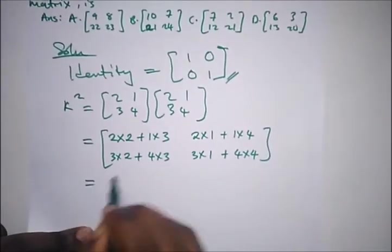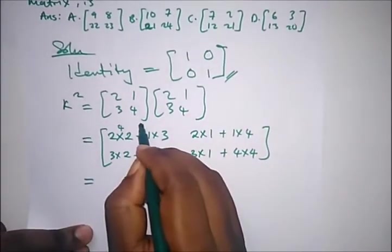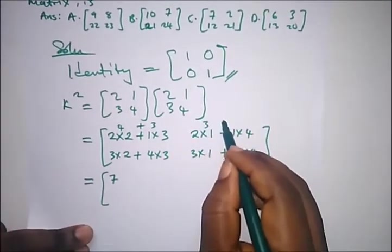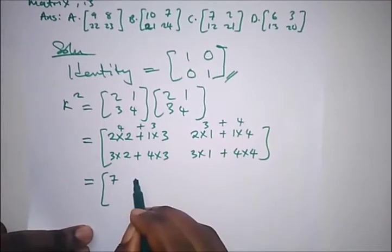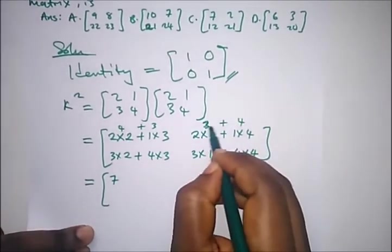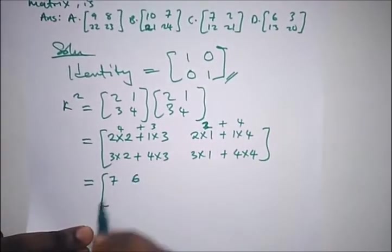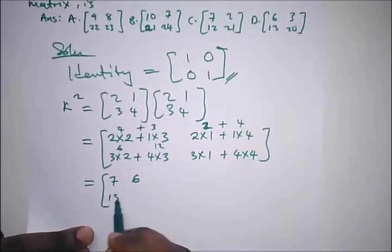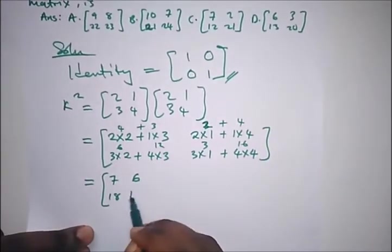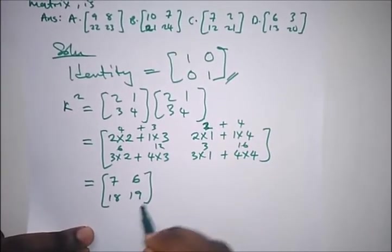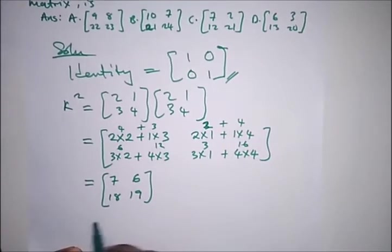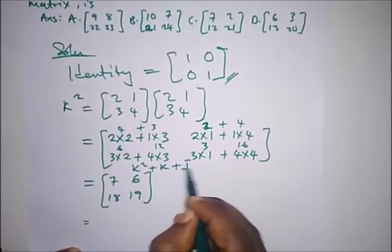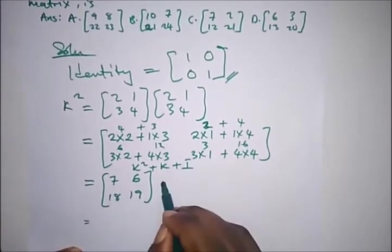Let's calculate this: 4 plus 3 is 7, this is 2 plus 4 which gives us 6, this is 6 plus 12 which is 18, and this is 3 plus 16 which is 19. So we're looking for k squared plus k plus the identity.